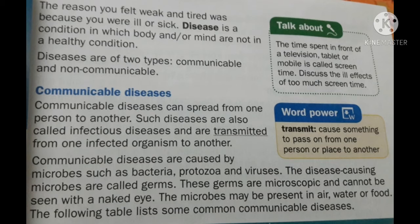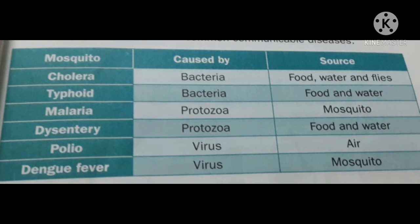Microbes may be present in air, water, or food. Now, the next table will help you to understand some communicable diseases. Children, you are seeing a table. Note: the first column heading should read 'Disease' — not 'Mosquito'. The second column is 'Caused By' and the third is 'Source'. Cholera is caused by bacteria, and its source is food, water, and flies. Typhoid is also caused by bacteria and spreads through food and water. Malaria is caused by protozoa and its source is mosquitoes. Dysentery is caused by protozoa and its source is food and water.